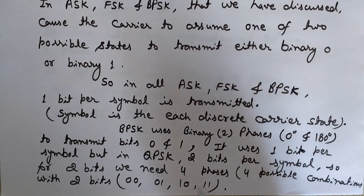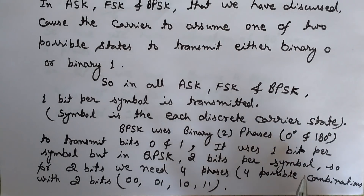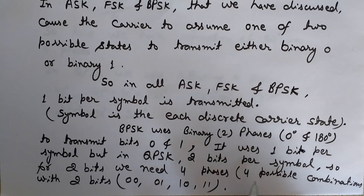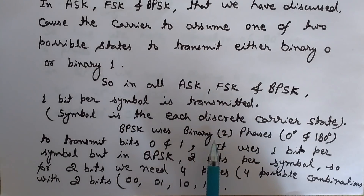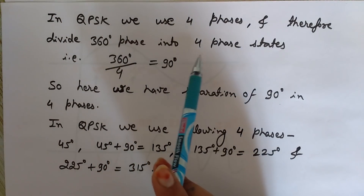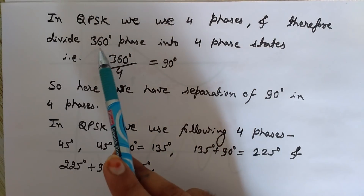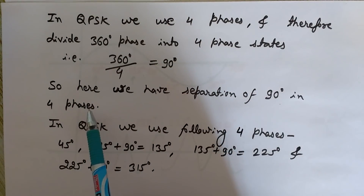In QPSK it is very important to note that two bits per symbol are transmitted. In each symbol we have two bits. For two bits we need four phases, because two bits give four possible combinations: 00, 01, 10, and 11. This is QPSK. The term 'quadrature' means we have four phases, unlike BPSK where we need only two. Therefore in QPSK the total 360-degree phase is divided into four states — 360 divided by 4 equals 90 degrees — so there is a separation of 90 degrees between phases.